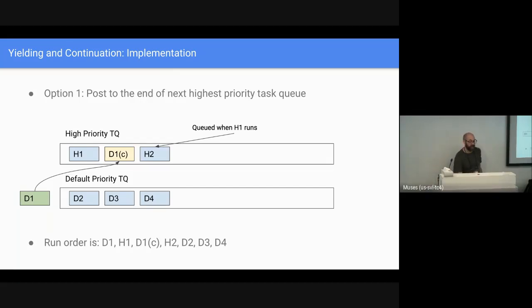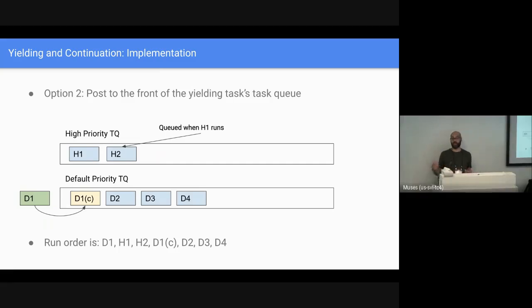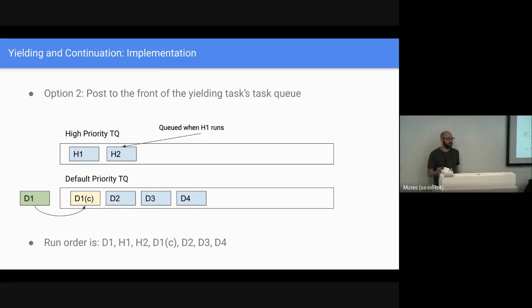What we want semantically — what's really clean conceptually — is that when a task yields, it yields to everything that's higher priority, including stuff that gets generated along the way. To achieve this from a scheduling perspective, one thing we could do is wedge the continuation at the front of that task queue — make it more like a stack and push it to the front. This would allow us to get the positioning we want, and let all the high priority work and anything it generates run before this.